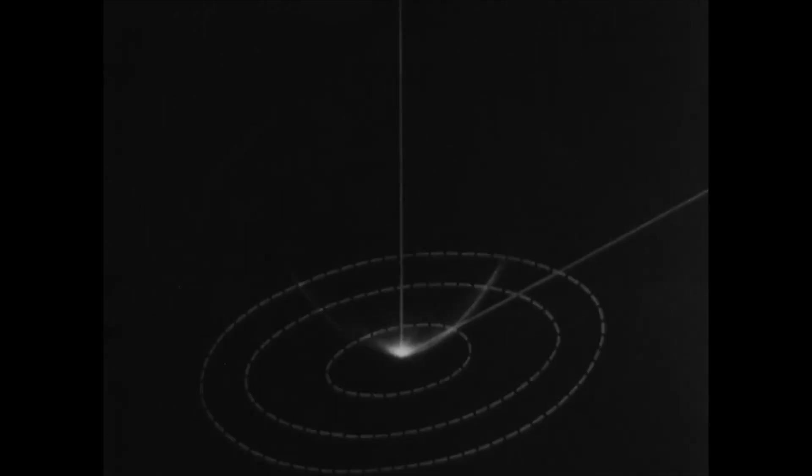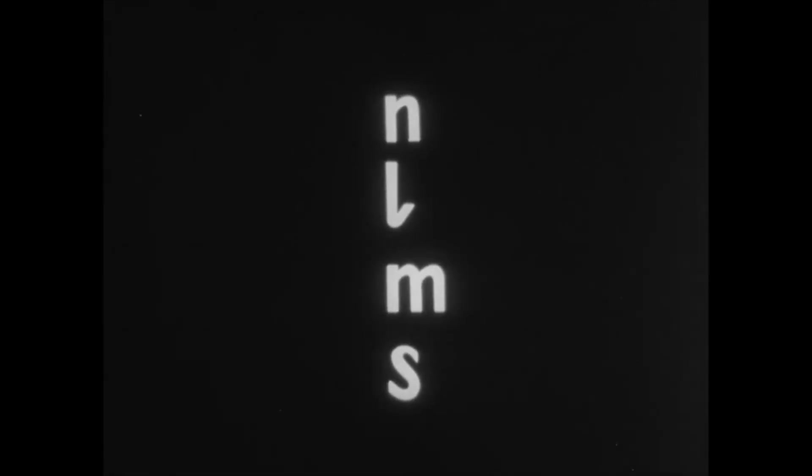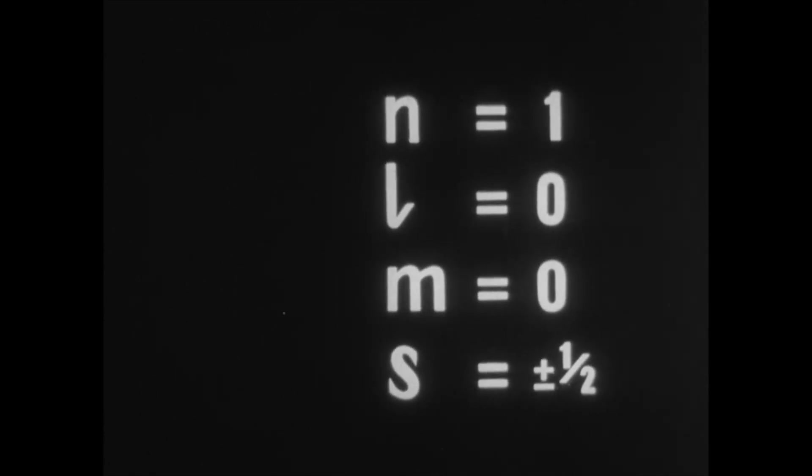The simplest orbital corresponds to the electron state with the quantum number N equal to 1 and L equal to 0, and a specific energy. This state is denoted as 1s.